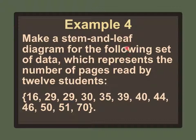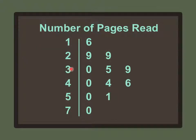Just like a tree can have several leaves on one stem, multiple values can appear next to one stem. For example, there's a 0, 5, and 9 listed next to the 3, representing 30, 35, and 39. So a stem of 1 with a leaf of 6 is 16; stem 2, leaf 9 is 29; another 29 repeats. Then 30, 35, 39, 40, 44, 46, 50, 51, and 70.